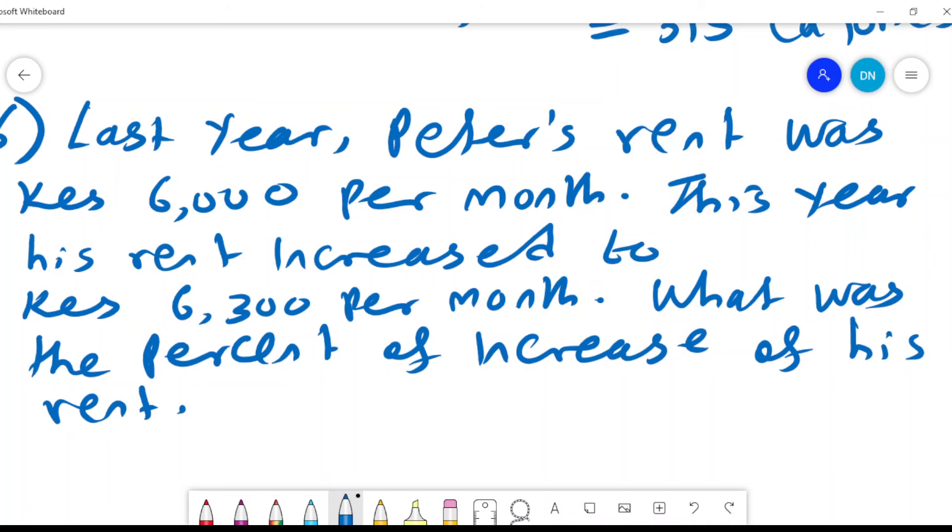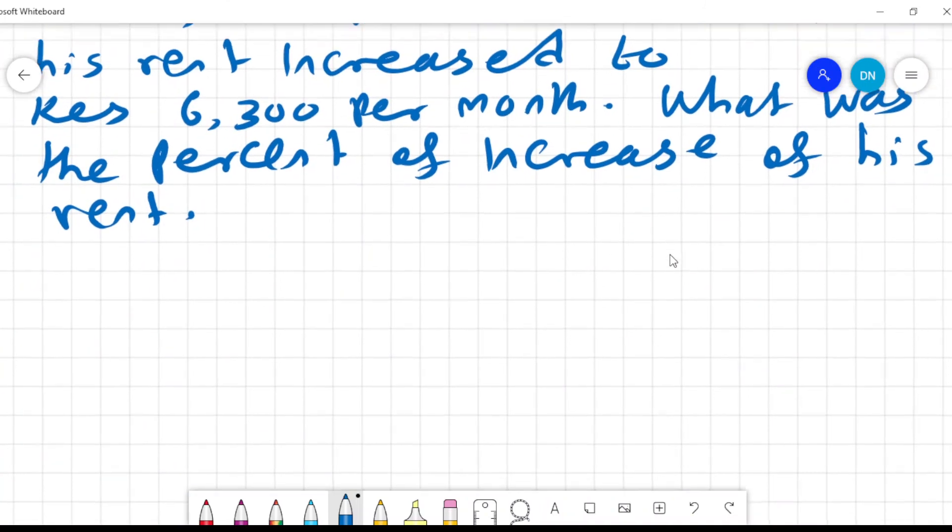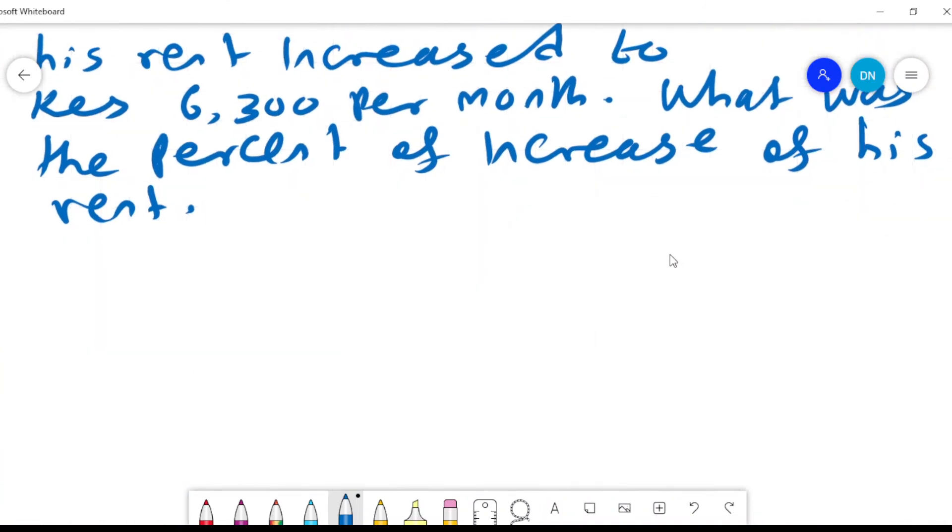Last year, Peter's rent was Kenya Shilling 6,000 per month. This year his rent increased to 6,300 per month. What was the percent of increase of his rent? We want to find the percentage change. First, we want to get the amount of change, which is 6,300 minus 6,000.